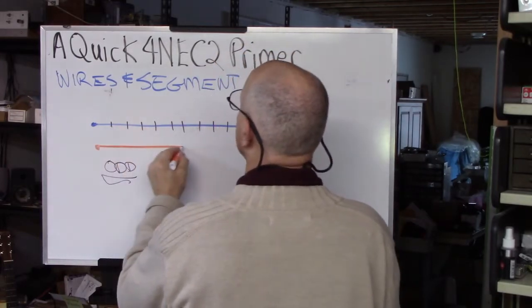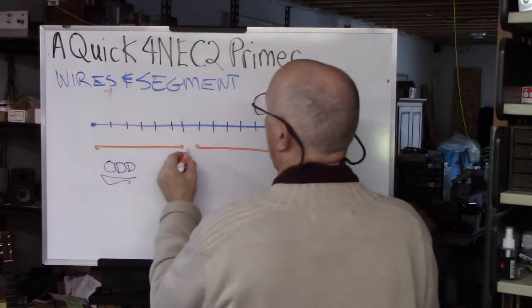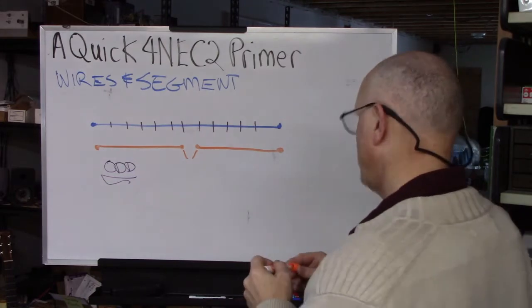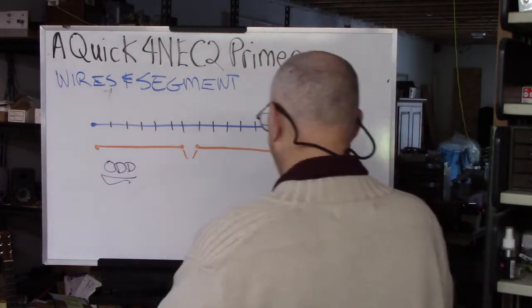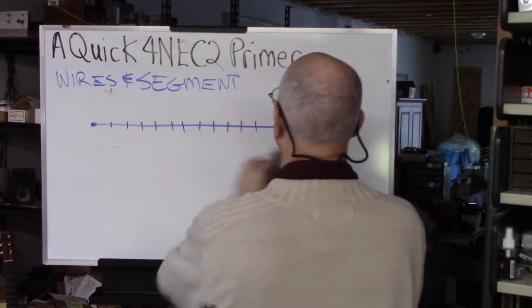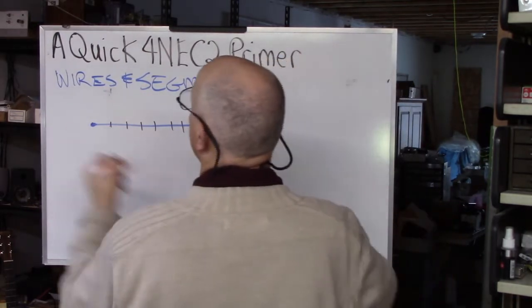I have a wire here. It comes here. And I got a wire here and it comes here. And this is where I connect my transmission line. Well, what you do in 4NEC2, in these antenna modeling programs,